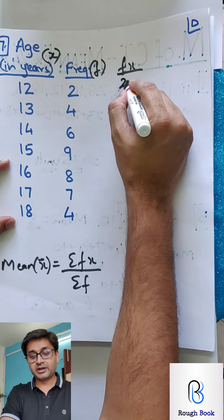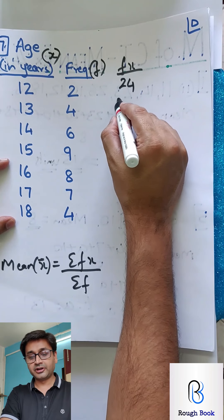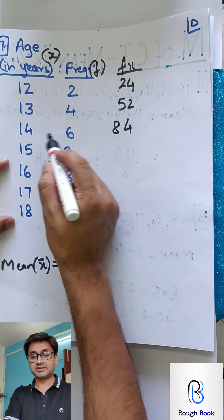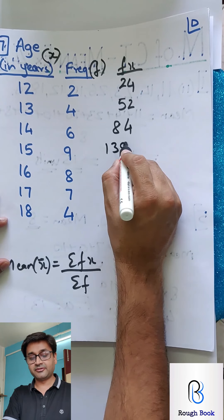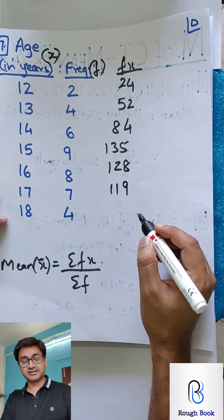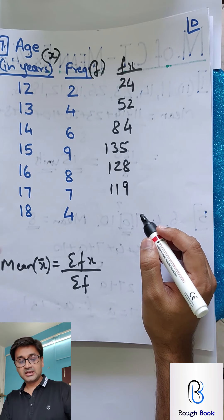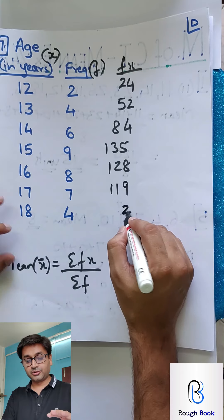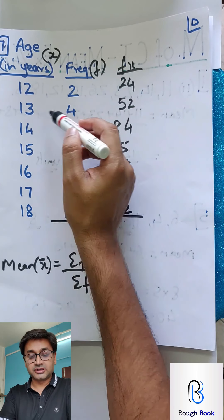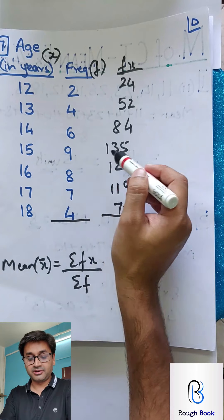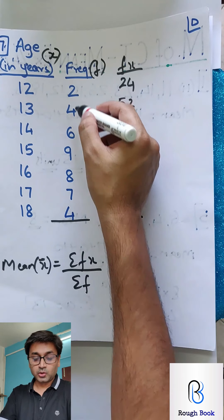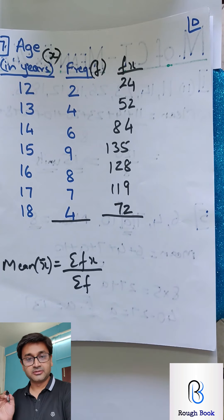Let us calculate: 12 into 2 is 24; 13 into 4 is 52; 14 into 6 is 84; 15 into 9 is 135; 16 into 8 is 128; 17 into 7 is 119; and the last FX is 72. Total the frequency column, total the FX column, put the values into the formula, and calculate the mean. Pause the video and try it yourself.